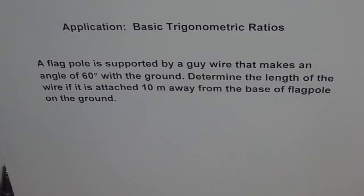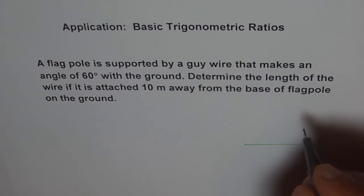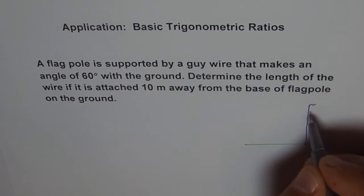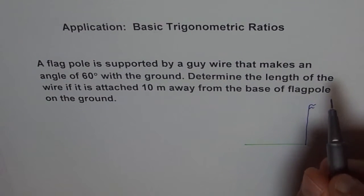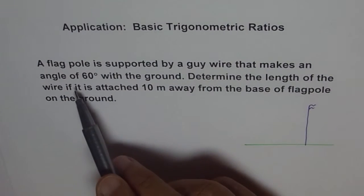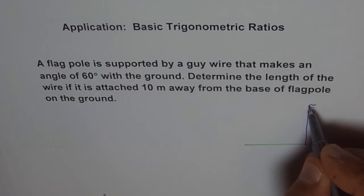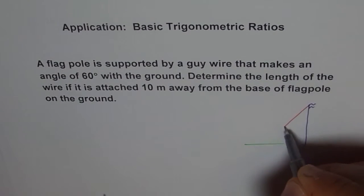Let's first sketch a diagram. Let's say this is the ground. Now, let's make a flagpole. This is the flagpole. It is supported by a wire which makes a 60 degree angle. So let's draw the 60 degree angle. It's approximately like this.